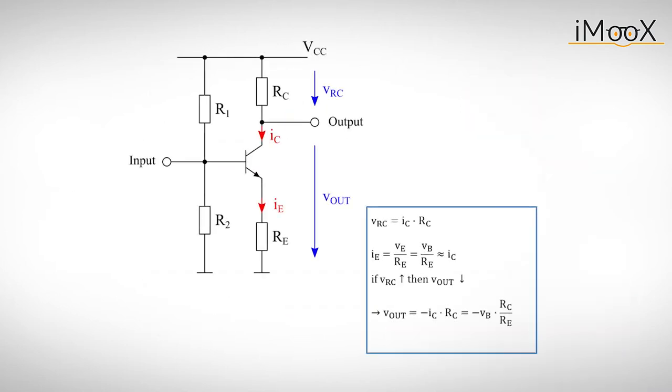If we look at the output voltage, we can see that the rise in IC causes an increasing voltage drop at the resistor RC, and therefore a decreasing voltage at the output. So, we can write Vout is minus IC times RC. Or, if we insert the formula above, we get Vout is minus VB times RC divided by RE.